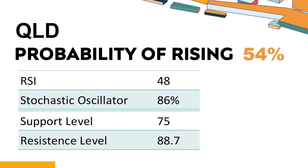The current stochastic oscillator of QLD is 86%. When the stochastic oscillator rises above the 80 level, it is usually considered overbought, indicating that the stock may be due for a price pullback. An overbought condition occurs when a stock's price rises too fast and too high in a short period of time and can be a sign that buying pressure has exhausted.